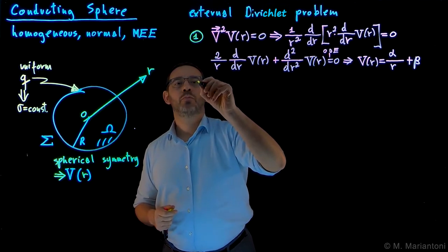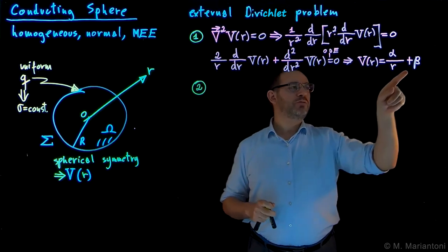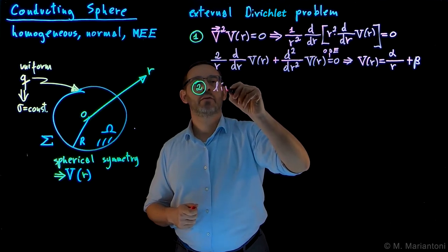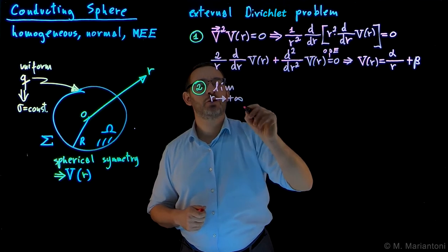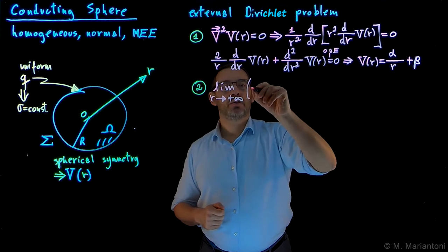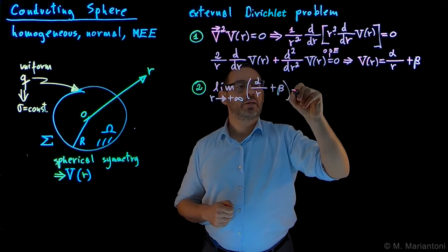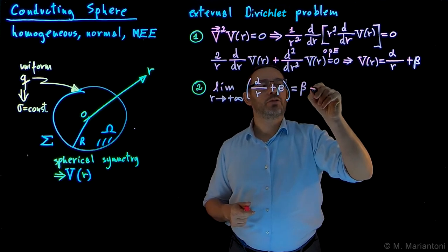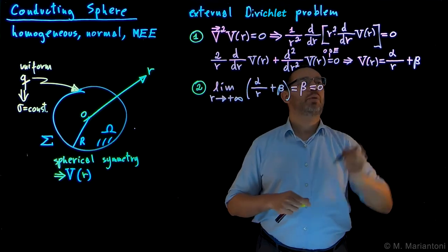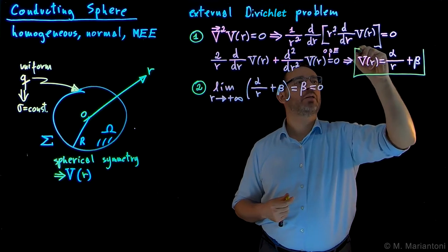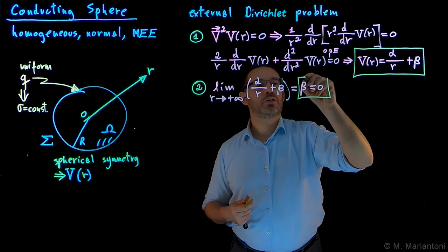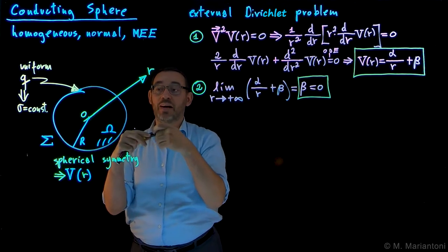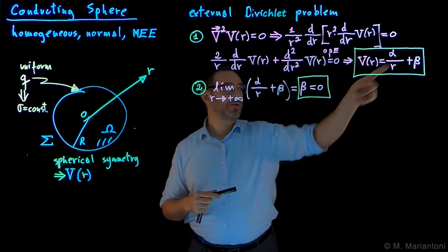Step two: we want to find one of the two parameters, beta. We find beta by taking the limit as r goes to plus infinity of V(r), which is alpha/r + beta. When r goes to infinity, alpha/r goes to zero, so this equals beta. Beta has to be equal to zero under normal conditions at infinity, because the charge is distributed only on the finite surface of this object. So we found beta equals zero.